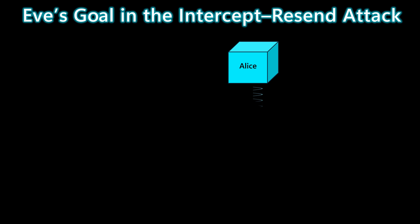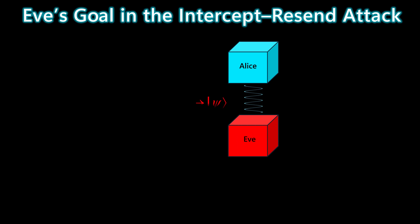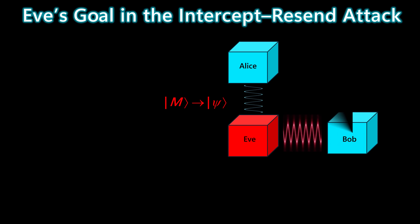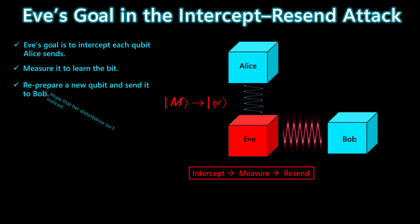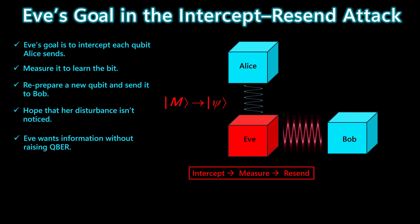Eve's objective is simple. She wants to intercept each qubit Alice sends, measure it to learn the bit, and then re-prepare a new qubit to forward to Bob, all without being detected. But this measurement step inevitably disturbs the quantum state. So even though Eve hopes the disturbance will go unnoticed, her actions introduce errors that Alice and Bob will eventually detect.